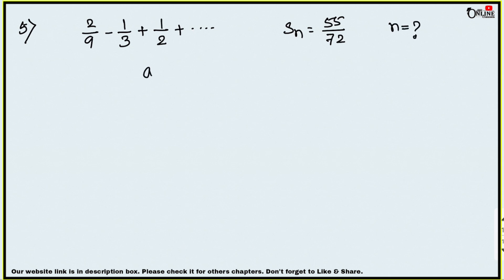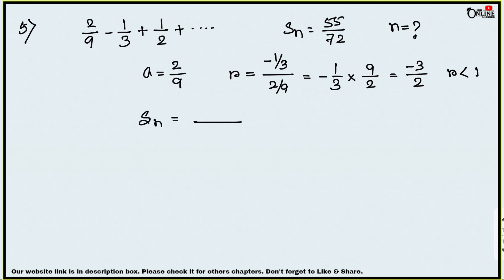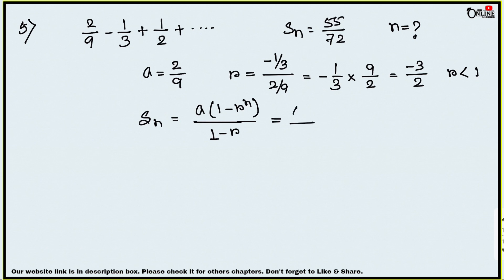First, the first term a = 2/9. The common ratio r = second term divided by first term, so r = (−1/3) ÷ (2/9) = −3/2. Since |r| < 1, the formula for Sn is: Sn = a(1 − rⁿ) / (1 − r). Setting this equal to 55/72.